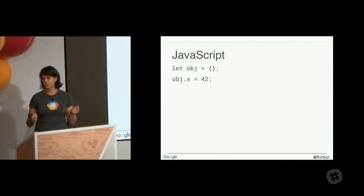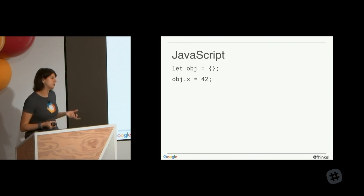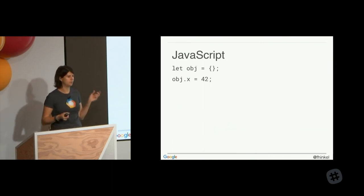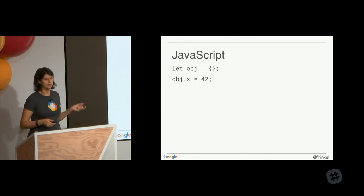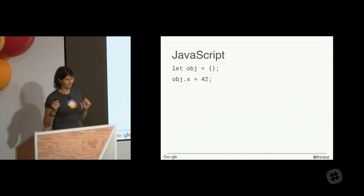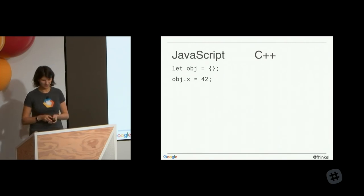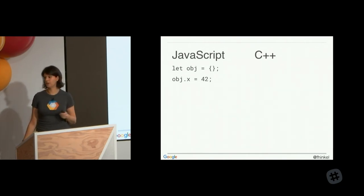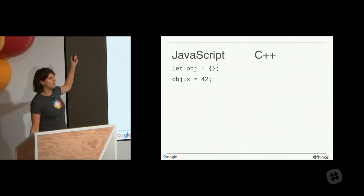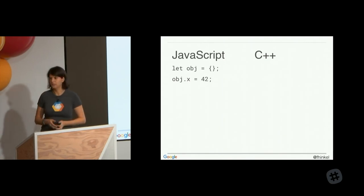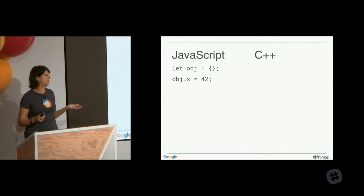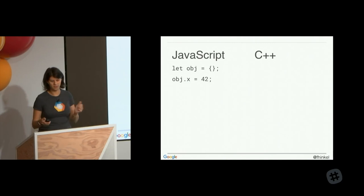Before we can talk about performance, I want to point out one fundamental difference between a dynamically typed scripting language like JavaScript and a statically typed language like C++. In JavaScript, if you want to have a property X on an object, you can do this at any time — define a variable, assign an object to it, and set the property X to 42. Perfectly valid code.